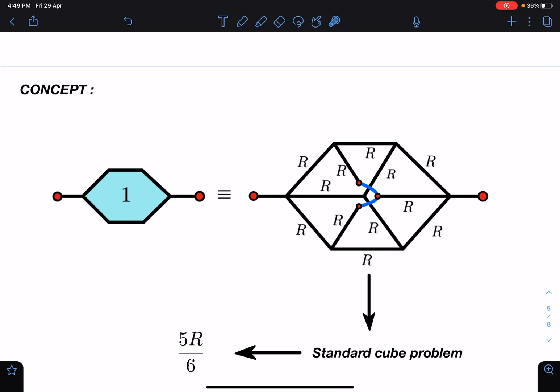Or you will see in books if you take current of say 6i, then 2i, 2i, 2i, and then i, i, and again you will collect the same current, then also you will be getting 5R by 6. So I am not going into detail of that because it is pretty obvious.